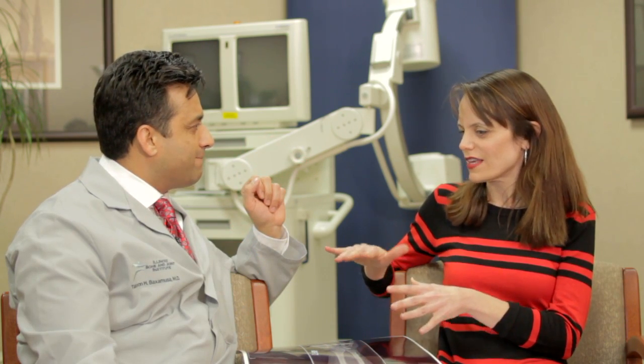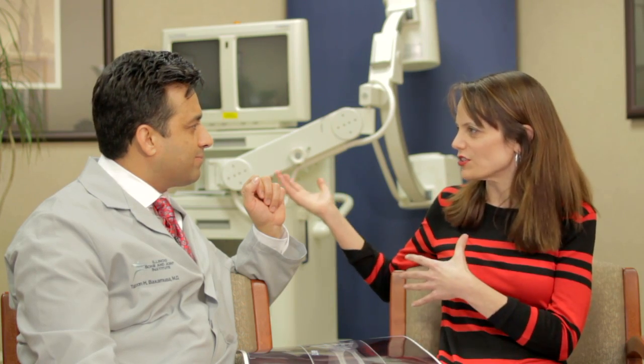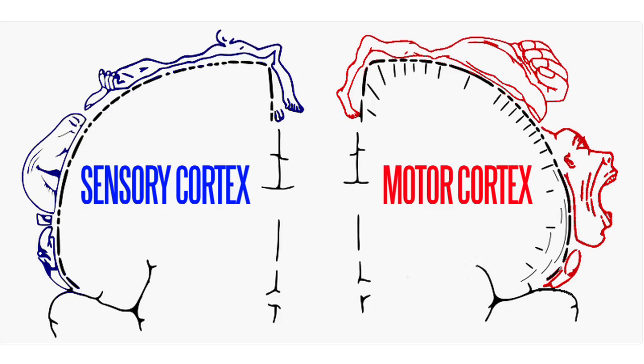How does the hand work in relation to the brain? The only other area of the brain with more complicated function is speech, and the face and lips. This is described through the homunculus. If you look at the homunculus of the brain, hand function is so complicated that it comprises over 25% of the cortical area controlling our intricate functions.